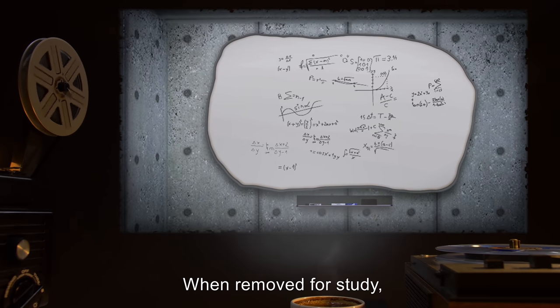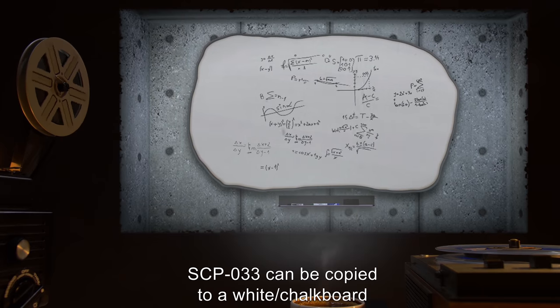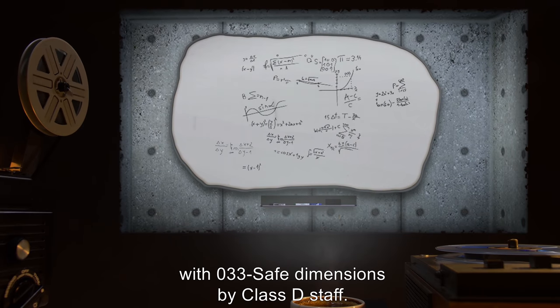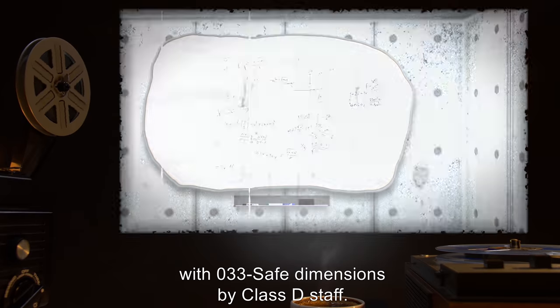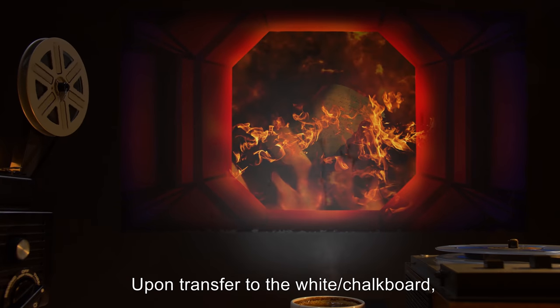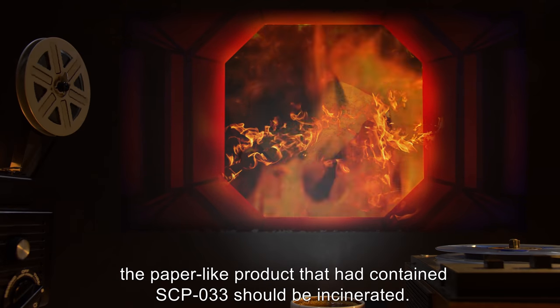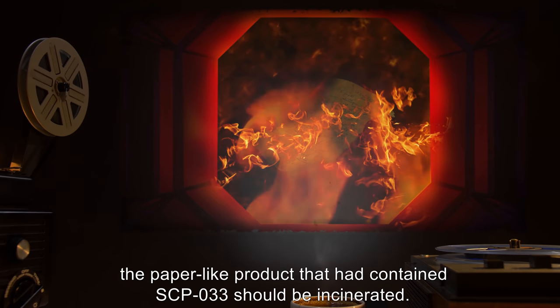When removed for study, SCP-033 can be copied to a white or chalkboard with 033 safe dimensions by Class D staff. Upon transfer to the white or chalkboard, the paper-like product that had contained SCP-033 should be incinerated.